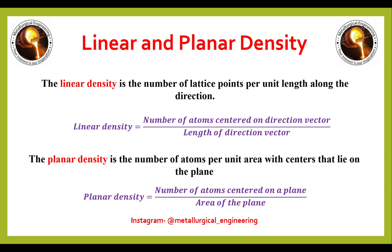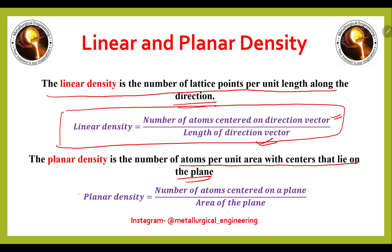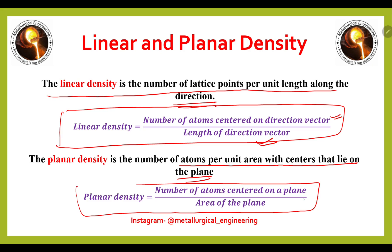The next topic is linear and planar density. Linear density is the number of lattice points per unit length along a direction, calculated as: number of atoms centered on the direction vector divided by the length of the direction vector. Planar density is the number of atoms per unit area with centers lying on the plane, calculated as: number of atoms centered on a plane divided by the area of the plane.